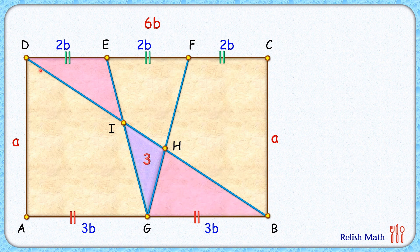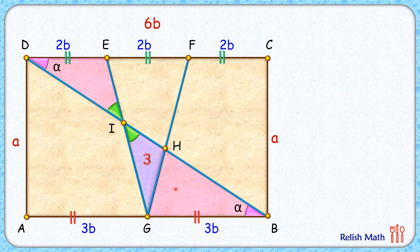Now let's examine the top pink triangle and the bottom pink triangle. Assume angle D is alpha degrees. Since the breadth lines of the rectangle are parallel, these are alternate interior angles, so angle B is also alpha degrees. These angles are vertically opposite and thus equal, so we can say these two triangles are similar to each other.